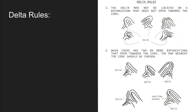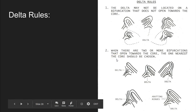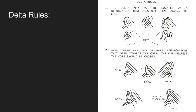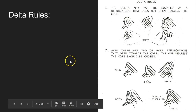A couple of rules about deltas. First, a delta may not be located on a bifurcation that does not open towards the core — that bifurcation has to open towards the core, not towards the outer portion of the fingerprint. Also, when there are two or more bifurcations that open towards the core, the one nearest the core should be chosen. For example, if a ridge between the type lines bifurcates twice, we pick the one closest to the core as the actual delta. This is important because when we talk about ridge count, having the delta in the right location ensures an accurate count — putting the delta in the wrong spot could cause us to incorrectly call something a loop.